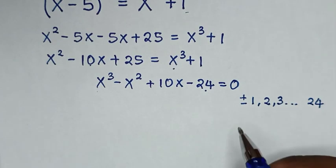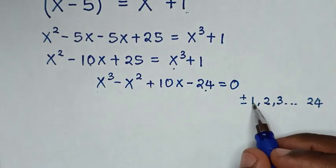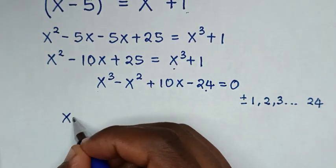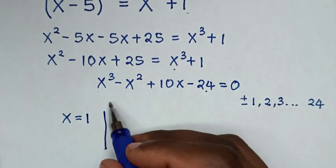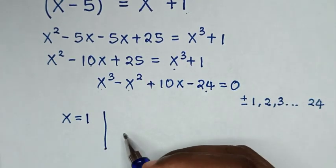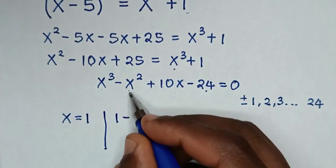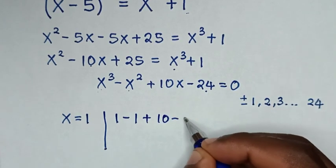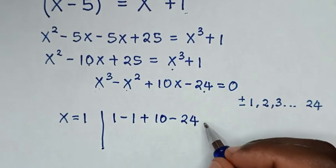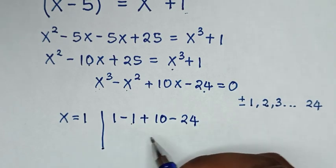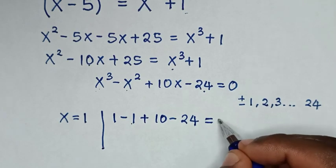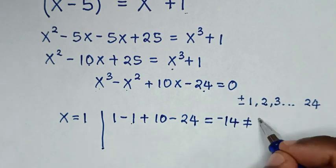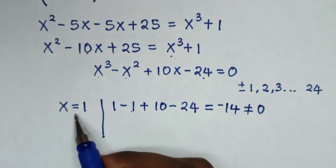Let's start to test from 1, to see if it will satisfy our equation and give 0. From x = 1, we substitute 1 in: 1³ is 1, minus 1² which is 1, plus 10 times 1 which is 10, minus 24. So 1 minus 1 is 0, plus 10 minus 24 equals negative 14, which is not equal to 0. So x = 1 does not satisfy our equation.